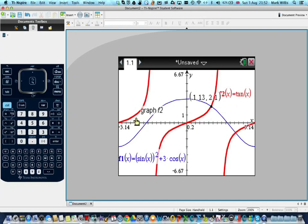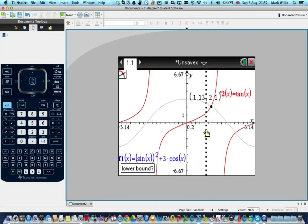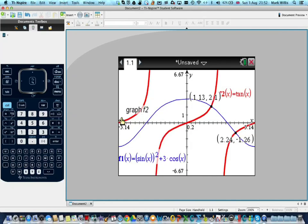And then I'm going to repeat it for the second one. So menu, analyze the graph, intersection, second, there. And we're using intersection because we wanted to know where these two things were equal. And there is the second one. So we've got 2.24 and the first one being 1.13.